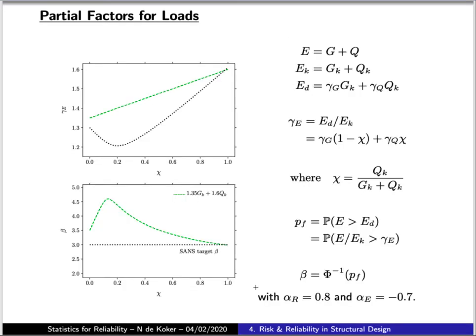Say that the total load effect, which we denote as E, is the result of our self-weight and imposed load. Then we can write a characteristic value for it, and in terms of the characteristic values of the self-weight and imposed load, we can have an equivalent design load using our individual partial factors.